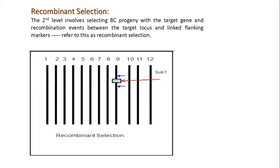After selecting the target locus, we have to choose flanking markers — markers situated on both sides of our target gene. This selection is known as recombinant selection and is the second level of the process.